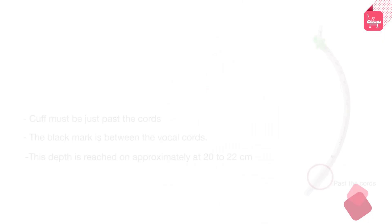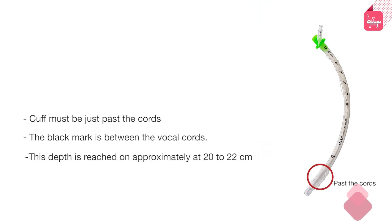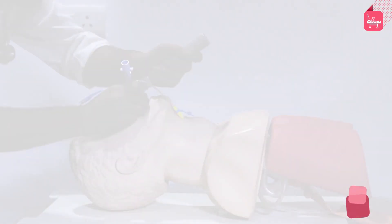Advance it until you watch the ET tube pass through the cords. The tube should be advanced so that the cuff is just past the cords and the black mark is between the vocal cords. This depth is reached on approximately at the 20 to 22 centimeter mark on the endotracheal tube.